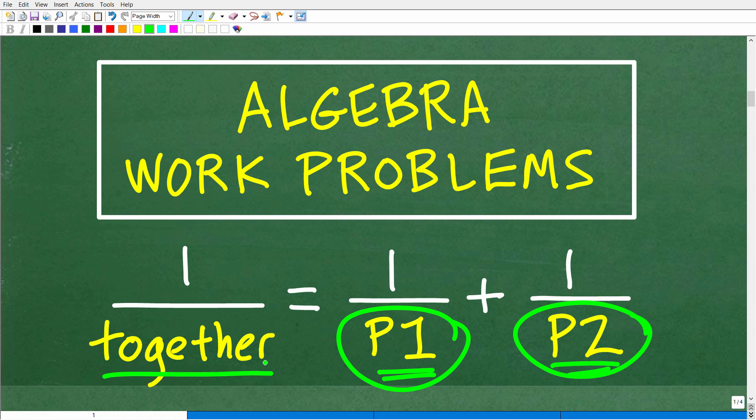We don't know how long it's going to take them to do this job together. Obviously, that's what we're looking to solve for. So we're going to have the variable X here that we want to solve for. We're going to end up with 1/X = 1/Ted's time + 1/Ed's time.